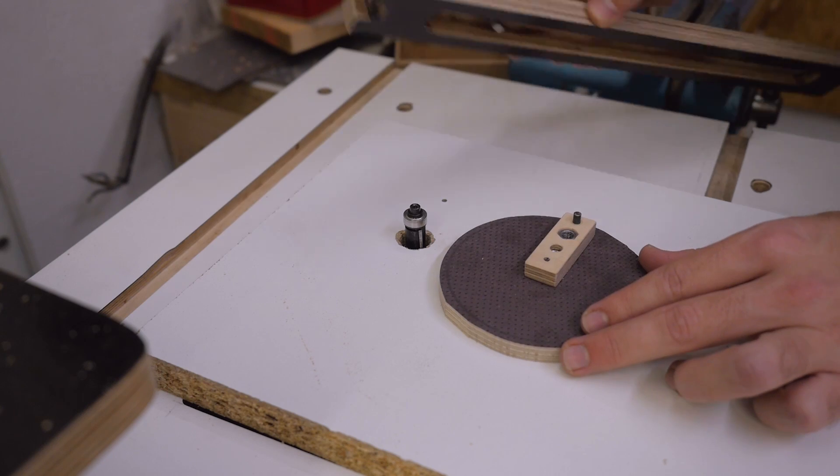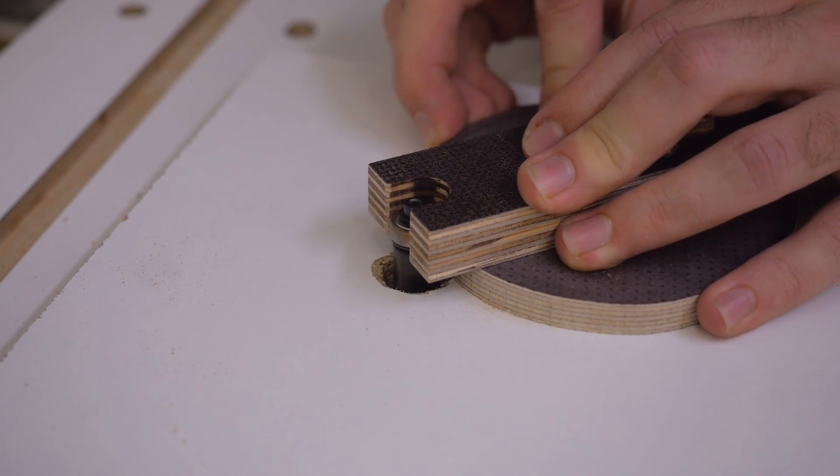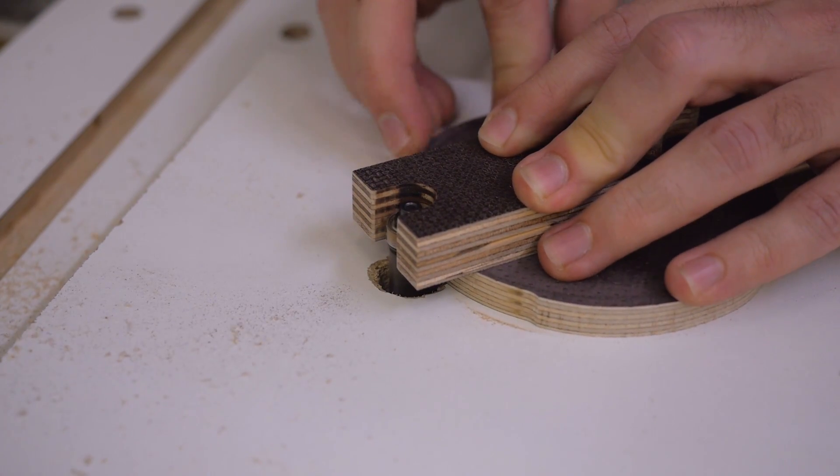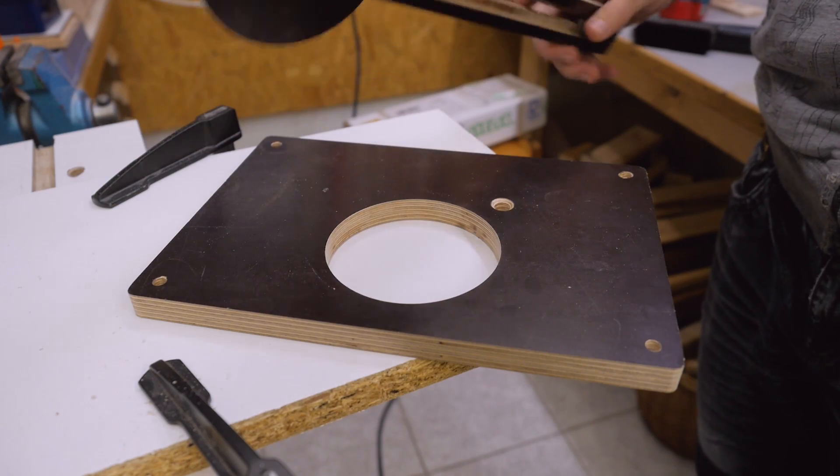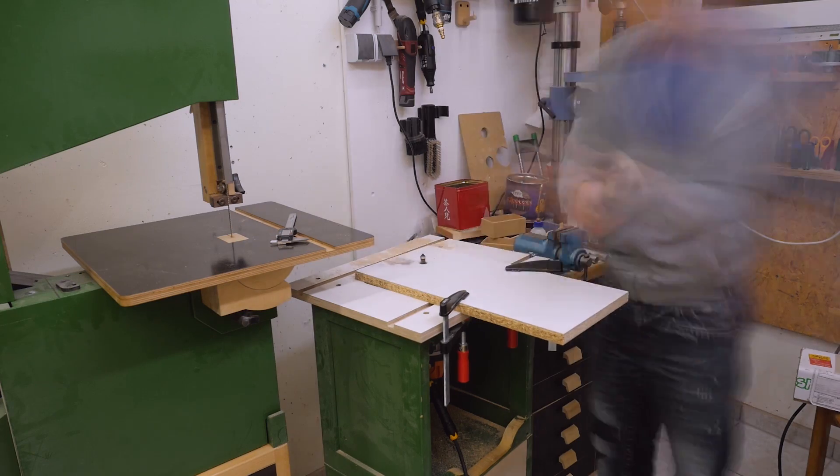Next I cut a roughly oversized circle which will be the insert plate insert plate. To get it to exact size I used my router table circle jig, about which I also have a video linked in the video description. Then it was basically a back and forth of adjusting a little bit, routing and testing until it had the right fit.